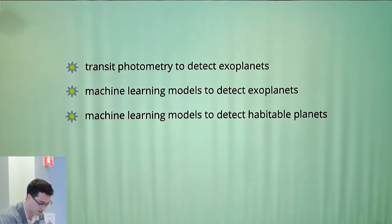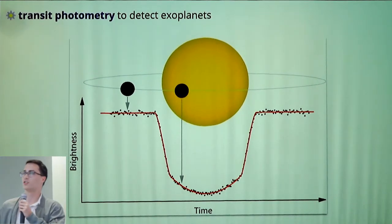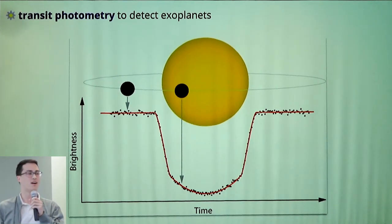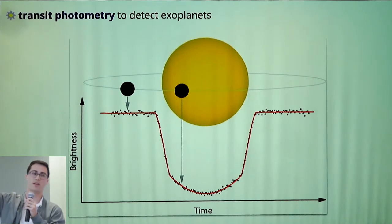We'll just jump right in. First of all, what is transit photometry? Transit, movement, photometry is the measurement of light. What you see here is some planets orbiting around a star, basically.